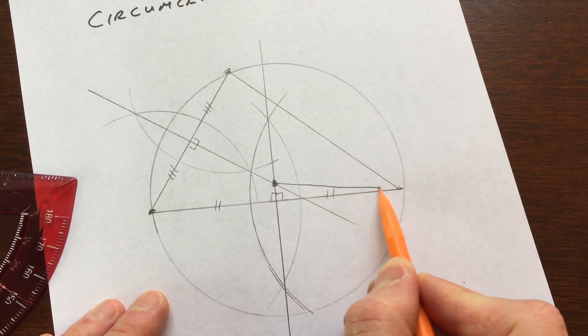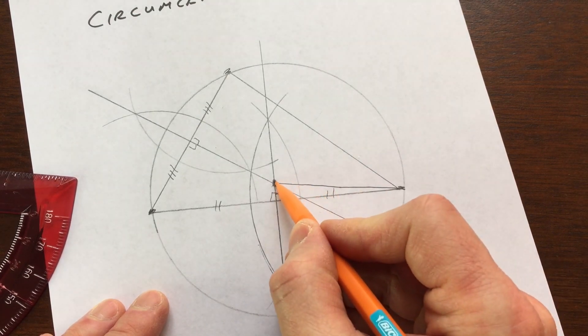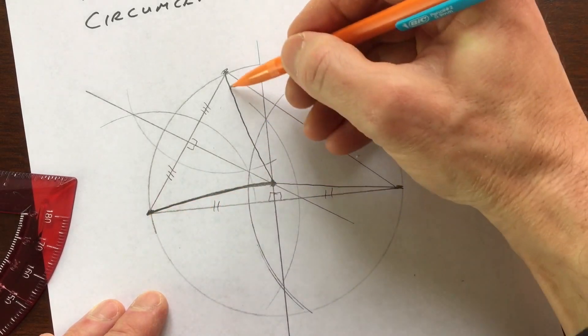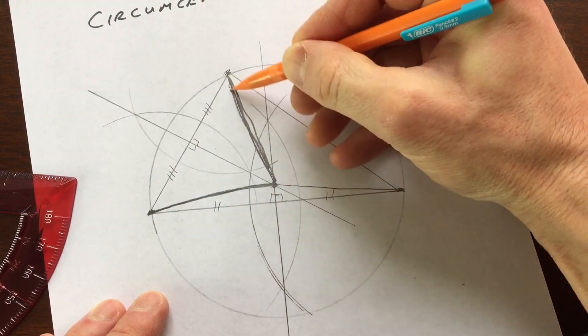those are all going to be congruent. So those are the radii of the circle, and they're going to all be equal to one another.